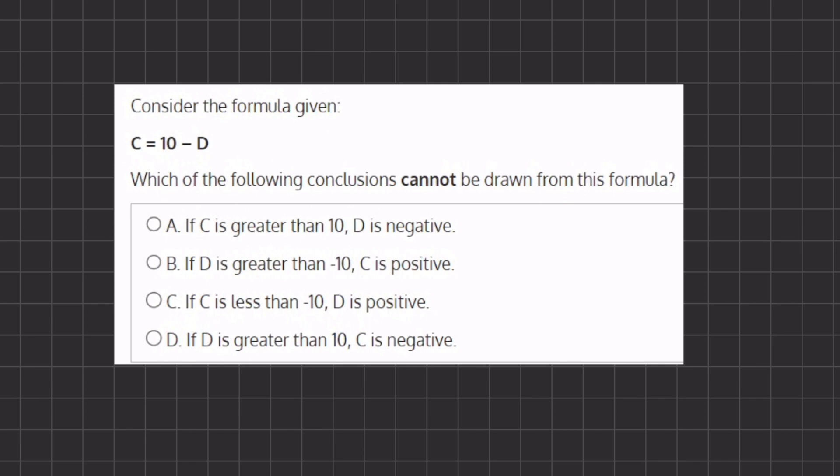Now an easy step to do to restructure this formula a little bit and make it easier for us to see, we can add the d to both sides. And now we have c plus d equals 10.